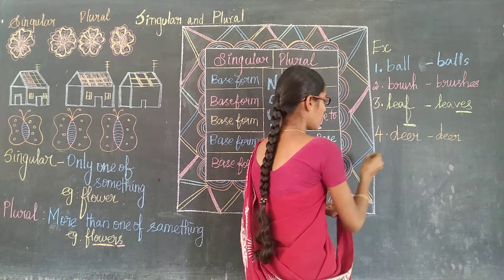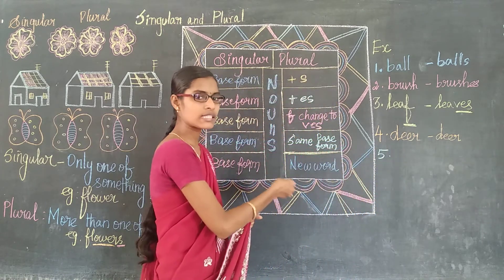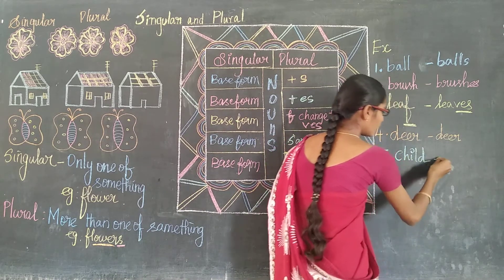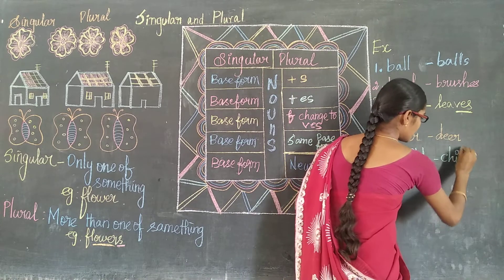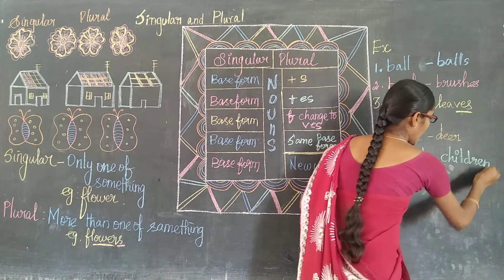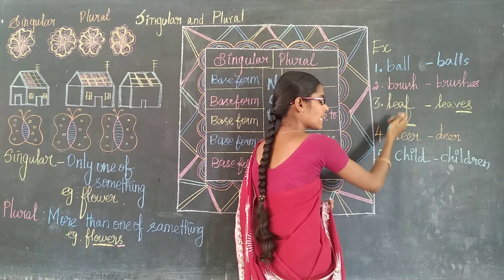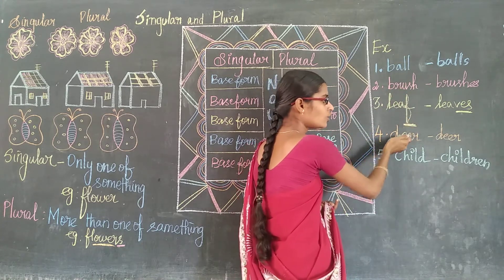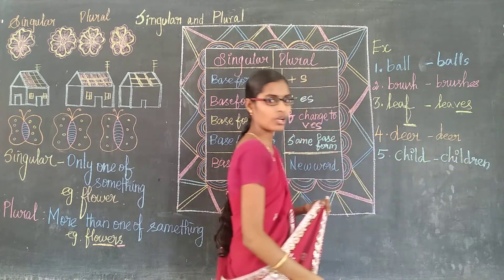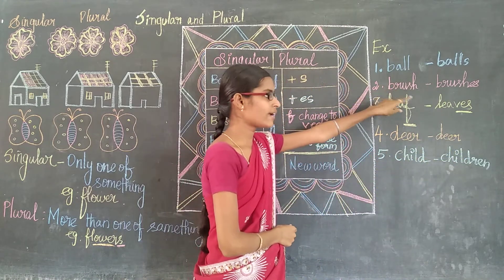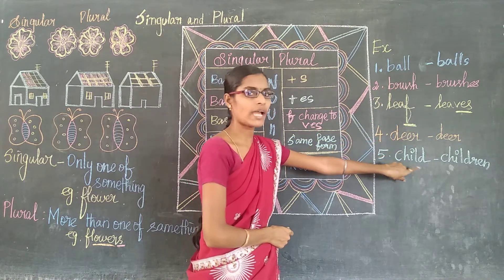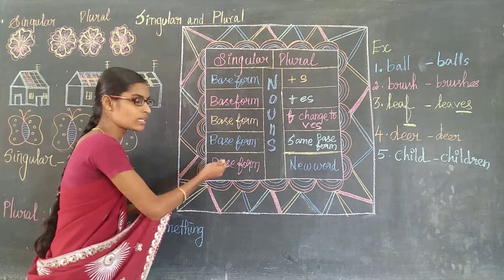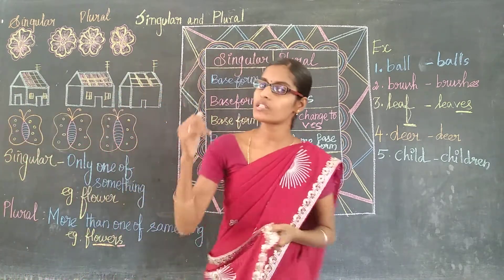And the fifth one — that is a new word. Child — the plural form for child is children. Have you noticed the difference between the first three rules and the last two rules? Here we are adding some letters. Here, no change. And here, the whole word gets changed. Ball, balls, brush, brushes, leaf, leaves, deer, deer, child, children. This is what singular and plural — we have five rules, and in next classes we will discuss these rules in detail.